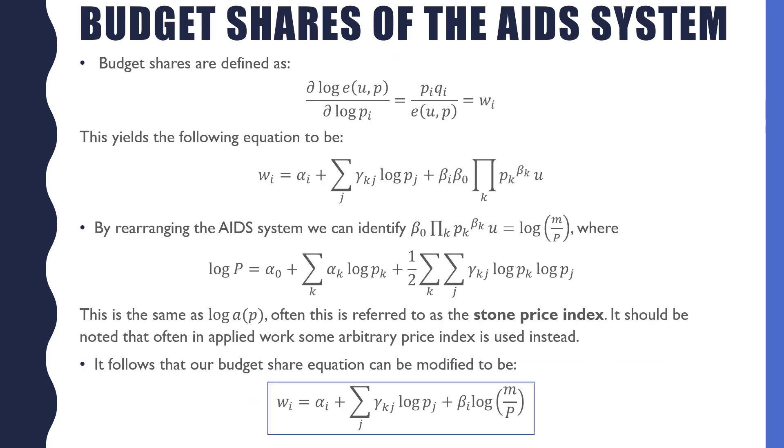Since we're dealing with a logged expenditure function, it's often easier to talk about budget shares as opposed to demands directly, because we're able to get proportions of income more easily by just deriving with respect to the natural log of these functions.